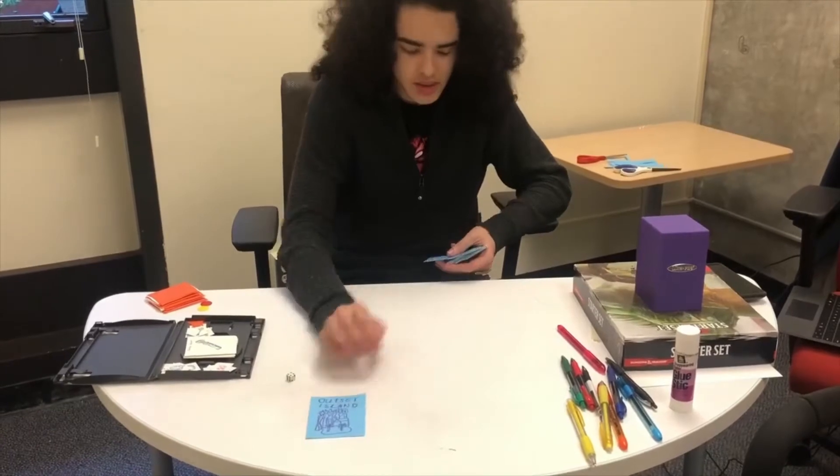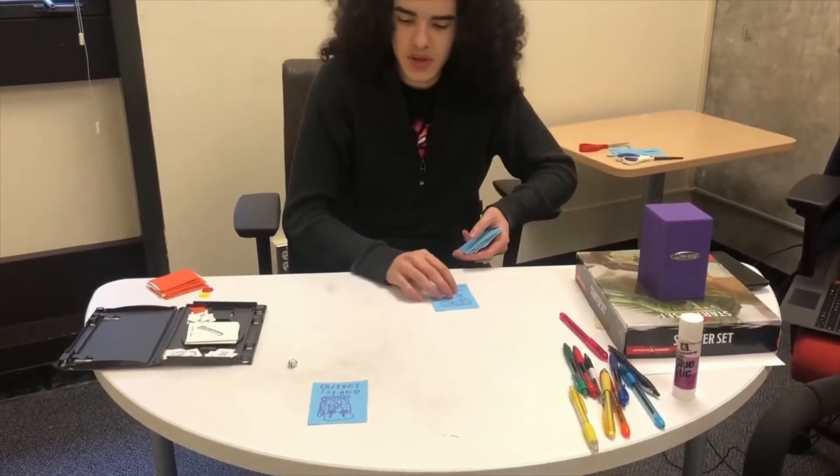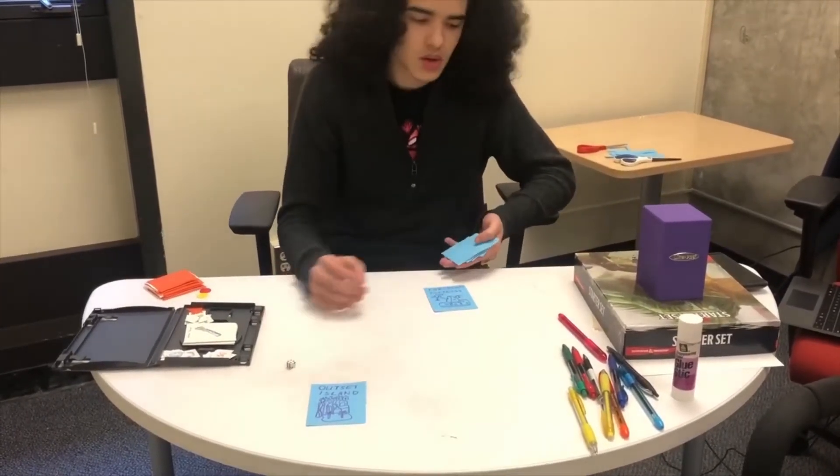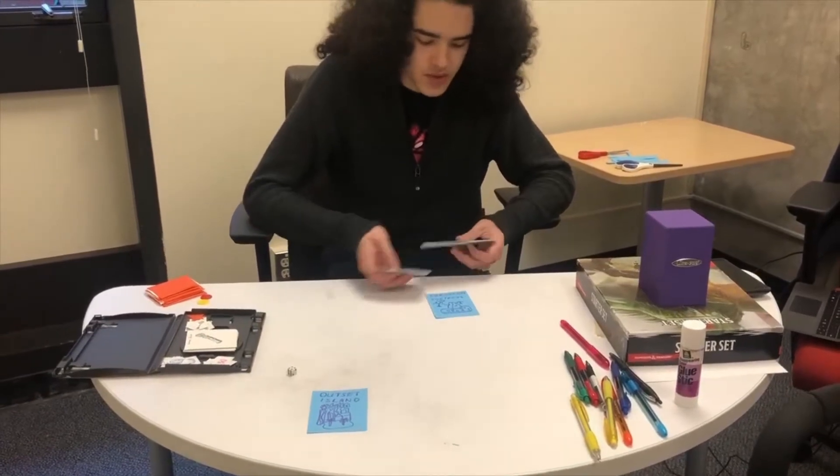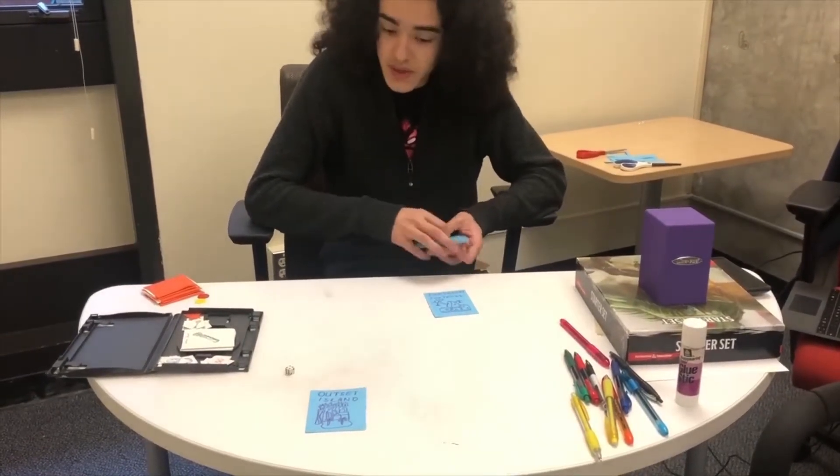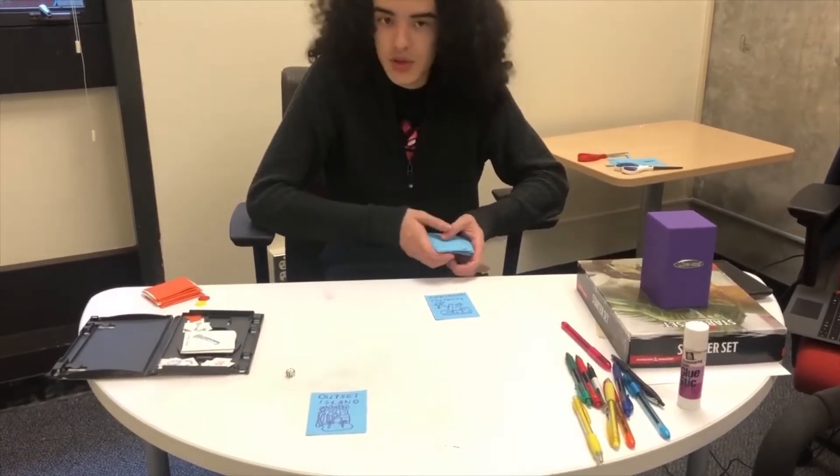For setup, find a flat surface to play on. Take Outset Island and Forsaken Fortress tiles and place them far enough apart on the surface. Then, take the remaining tile cards, the ones with the blue backs, and give them a good shuffle.